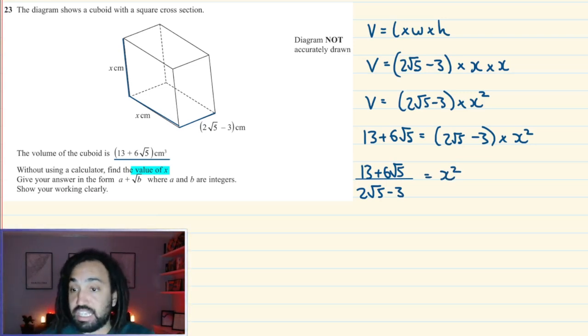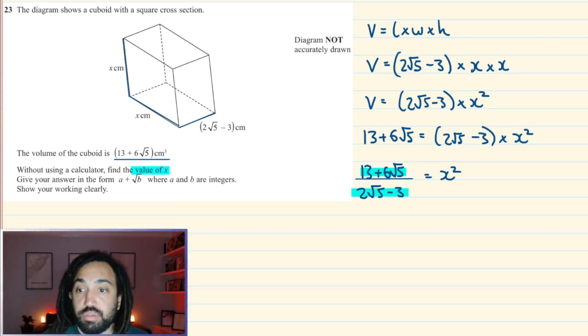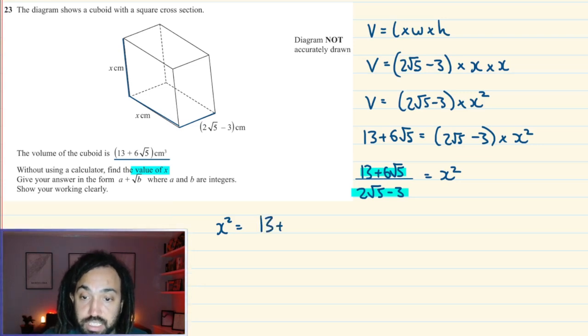Now you might get to this stage and think to yourself, well, how do you square root a surd? That's a good question. But before I do that, I'm going to rationalize the denominator. That's going to make things a bit easier. And because we've got this situation where we've got like a surd divided by another surd, we're going to use that technique to rationalize the denominator.